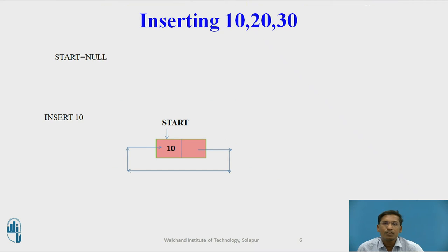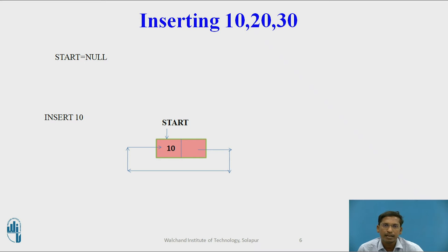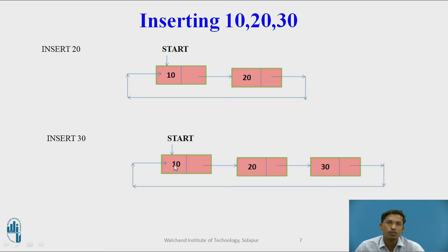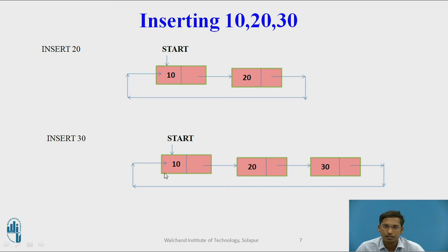For example, suppose I want to insert 10, 20, and 30. Initially start has null. After inserting 10, 20, and 30, the singly circular linked list looks like this: start points to the first node 10, and 30 is the last node whose next pointer points back to the first node.